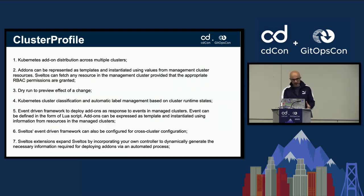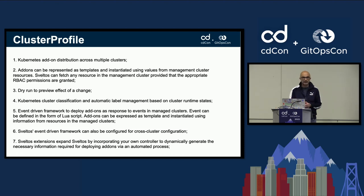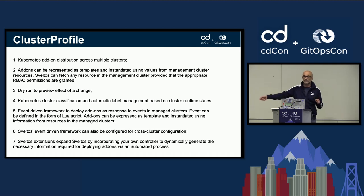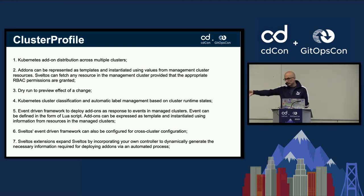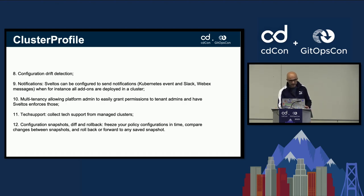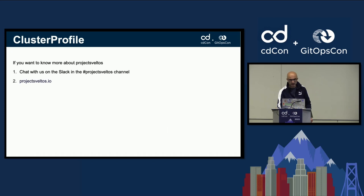There are a bunch of other features. The main reason we built another Kubernetes add-ons manager is to use the runtime state of a cluster to decide which add-ons to deploy, and also to have an event-driven framework to deploy add-ons in response to events happening in a cluster. We also wanted cross-cluster configuration — a way to say if you see an event in this cluster, deploy this set of add-ons in another cluster. Sveltos also has configuration drift detection and other features.